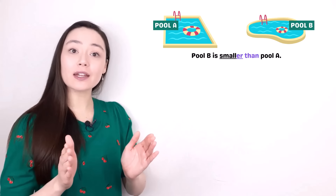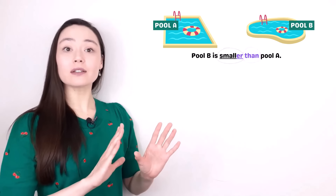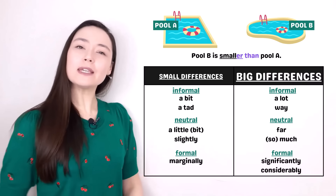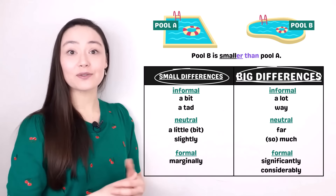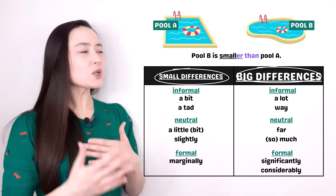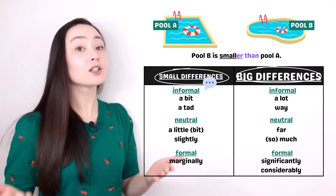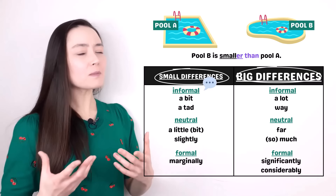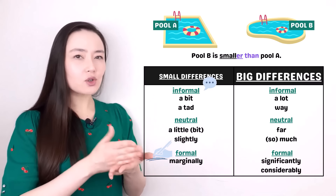I have two pools. Pool B is smaller than pool A. I have my comparative because I'm comparing two things. This is correct, but it's very general. How can I be more specific? We can use modifiers to show small differences or big differences. Informal modifiers are normally used in spoken English — and remember, informal English does not mean low level English; informal English is very natural. Then there are neutral and formal modifiers, which you'll normally see in written English. This chart is just a guideline — these aren't strict rules.